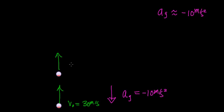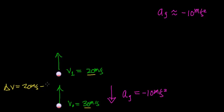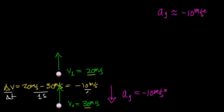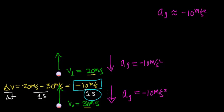After one second of moving upward under the influence of gravity, the velocity changes from 30 meters per second to 20 meters per second. The change in velocity is 20 minus 30, which equals negative 10 meters per second — so the velocity has changed by 10 meters per second in that one second. Gravity continues accelerating the ball downward at negative 10 meters per second squared, slowing it by 10 meters per second every second it moves upward.